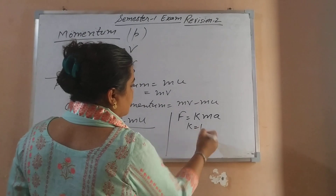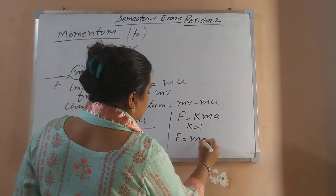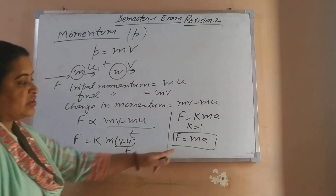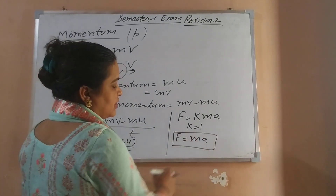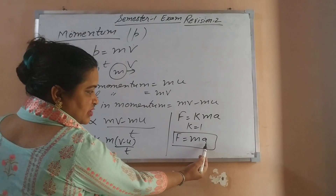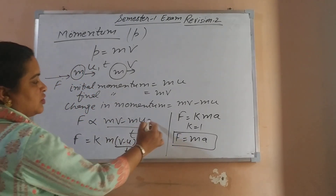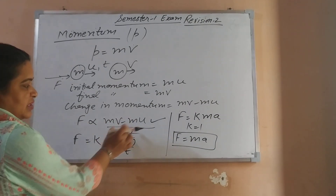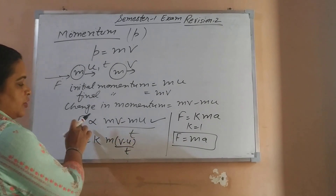So F = MA is Newton's Second Law mathematical formula, giving us the relation: force equals mass into acceleration. Sometimes in a paper, acceleration is directly given; sometimes change of momentum is given. When change in momentum is given, you put (MV − MU) divided by time to get the force.